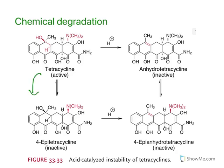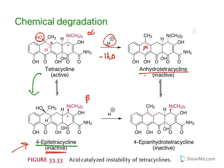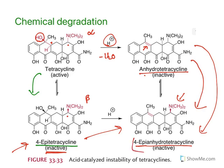Regarding chemical degradation: tetracycline can form an epimer called epi-tetracycline, where there is a change in configuration at only one carbon — the amine at C4 changes from alpha to beta confirmation. This epi-tetracycline is inactive. In the presence of acid, tetracycline can lose a water molecule to give anhydrotetracycline — the hydroxy group and a hydrogen are removed to form a double bond. Anhydrotetracycline can further convert to epi-anhydrotetracycline, which is also inactive.